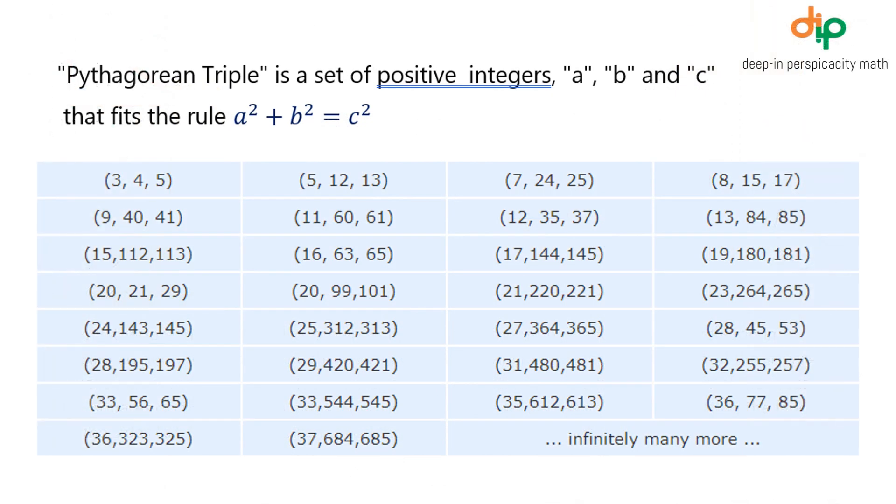Pythagorean triple is a set of positive integers a, b, and c that fits the rule: a square plus b square equals c square.